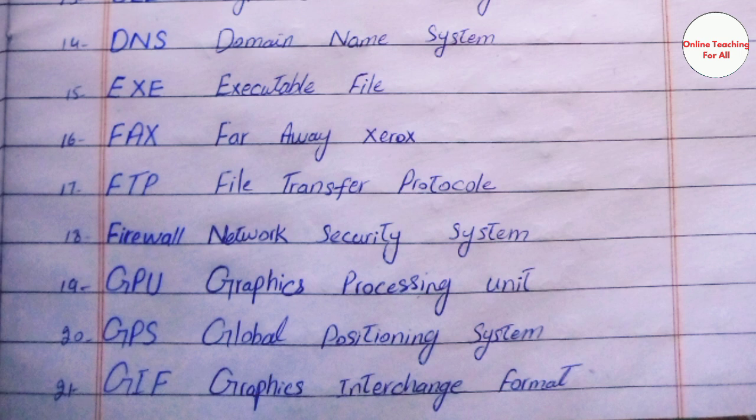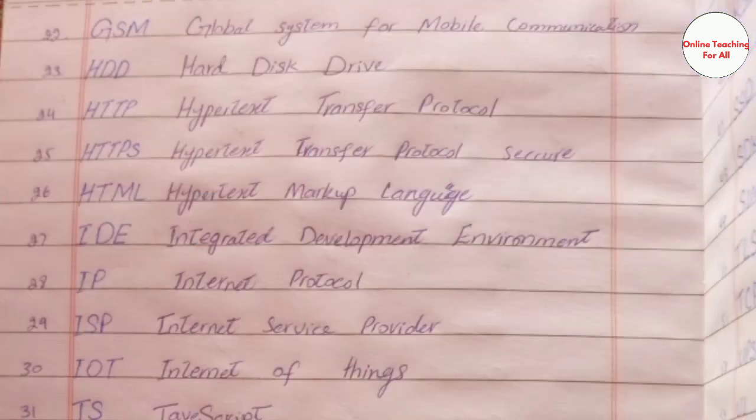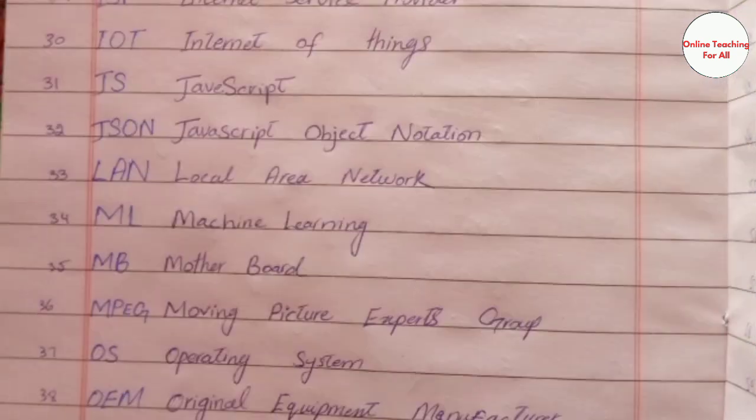GPU - Graphics Processing Unit. GPS - Global Positioning System. GSM - Global System for Mobile Communication. HDD - Hard Disk Drive. HTTP - Hypertext Transfer Protocol. HTTPS - Hypertext Transfer Protocol Secure. HTML - Hypertext Markup Language. IDE - Integrated Development Environment. IP - Internet Protocol. ISP - Internet Service Provider. IoT - Internet of Things. JS - JavaScript. JSON - JavaScript Object Notation.